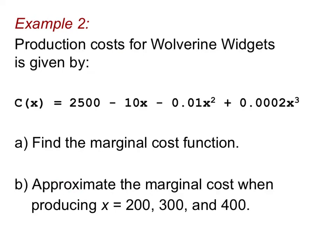Let's look at another example. Here, we show you the production costs for the Wolverine widgets company. That production cost is given by C(x) = 2500 - 10x - 0.1x² + 0.0002x³. It's quite a function. We are asked to find the marginal cost function—we know that means find the derivative—and then approximate the marginal cost when producing x equals 200, 300, and 400 widgets. In other words, we're going to plug these numbers into the derivative.